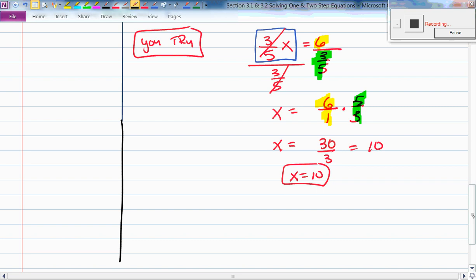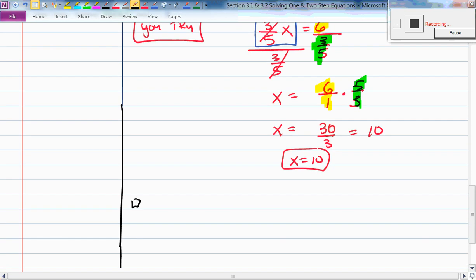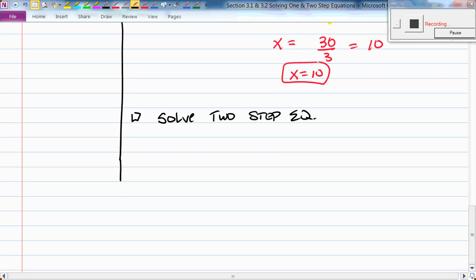Here we go. Third box. We're going to solve a two-step equation. How about 3x plus 7 equals 19? So why is this a two-step equation? What are the two steps? I have to get rid of the 7 over here. And I have to get rid of the 3. There are my two steps, correct?